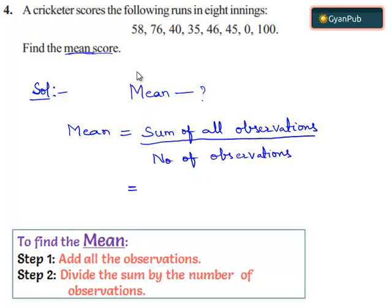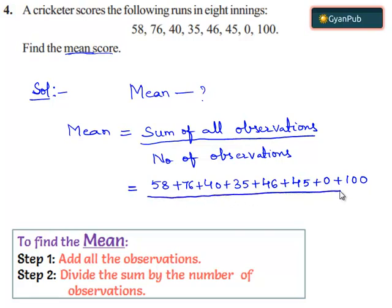Here the sum of all the observations is 58 plus 76 plus 40 plus 35 plus 46 plus 45 plus 0 plus 100. And the total number of observations is 8.